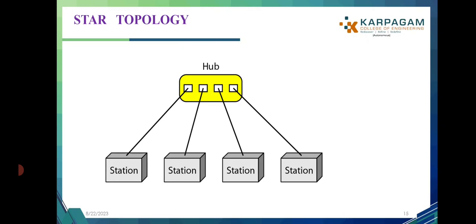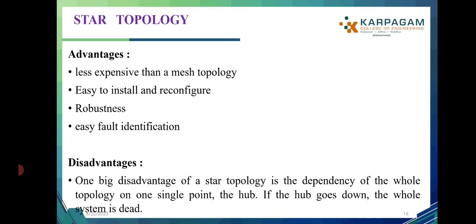Bus topology is a multi-point connection where n number of stations are mounted on a single lengthy cable using drop lines, enabling data transmission between stations. The advantages of bus topology are ease of installation and less cabling. The disadvantages are difficult reconnection and fault isolation — a fault or break in the bus cable stops all transmission.